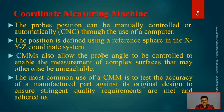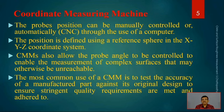The probe's position can be manually controlled via a joystick — one can move the probe from here to there, just like a game — or it can be controlled by computer, which senses where positions are and where data needs to be captured. The position is defined by a reference sphere in XYZ coordinates — mainly Cartesian, but easily convertible to cylindrical and spherical coordinates. CMMs also allow the probe angle to be controlled to enable measurement of complex surfaces that may otherwise be unreachable or inaccessible.